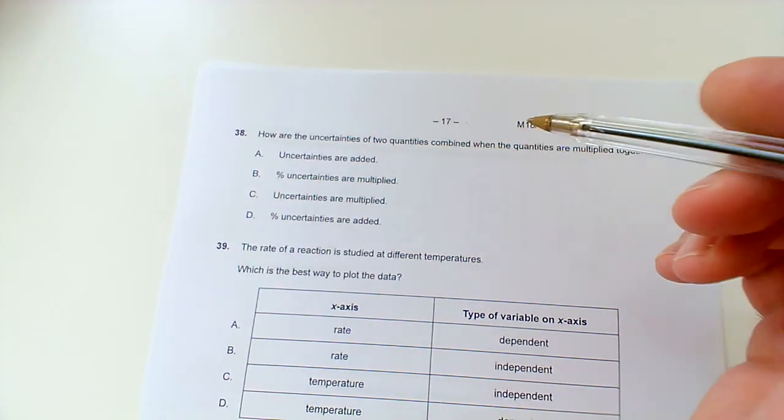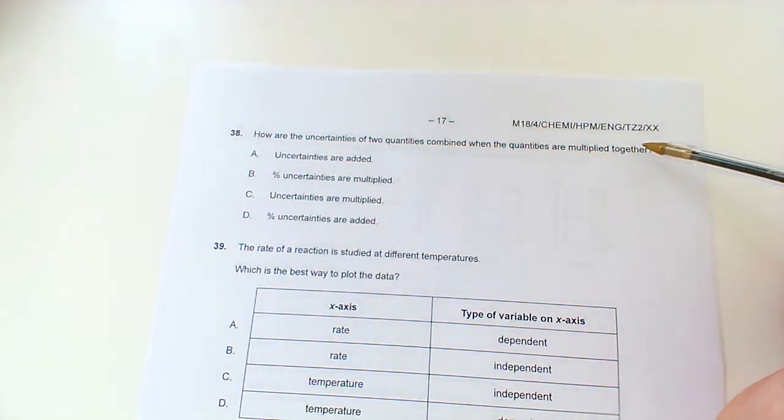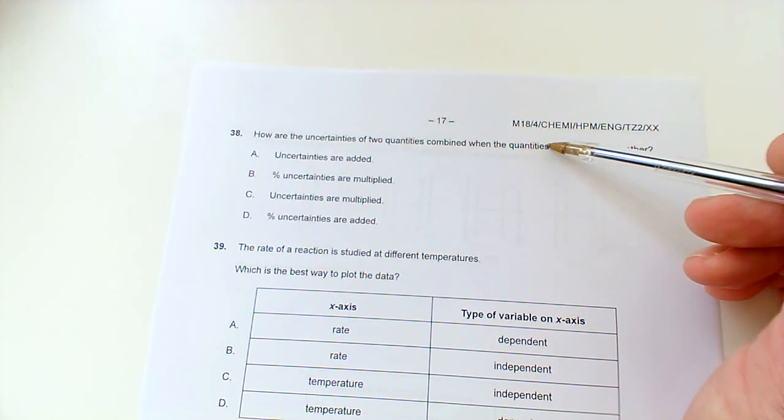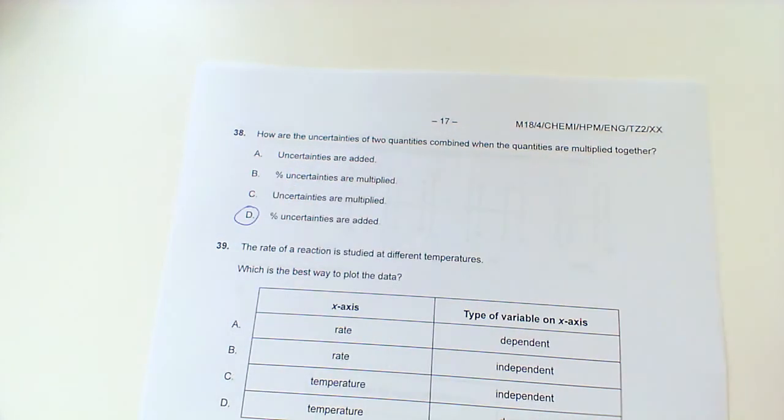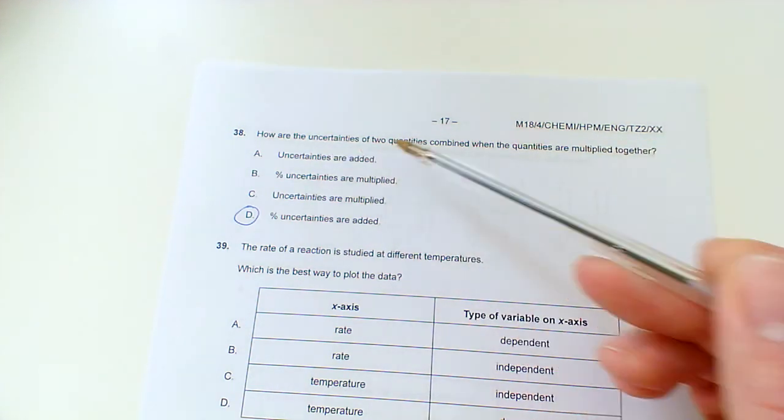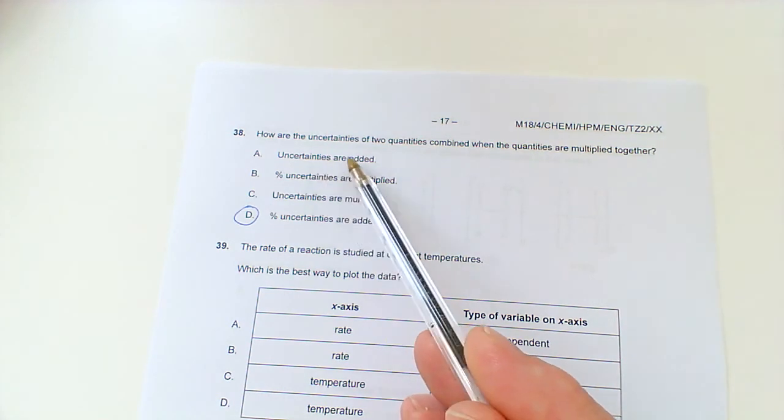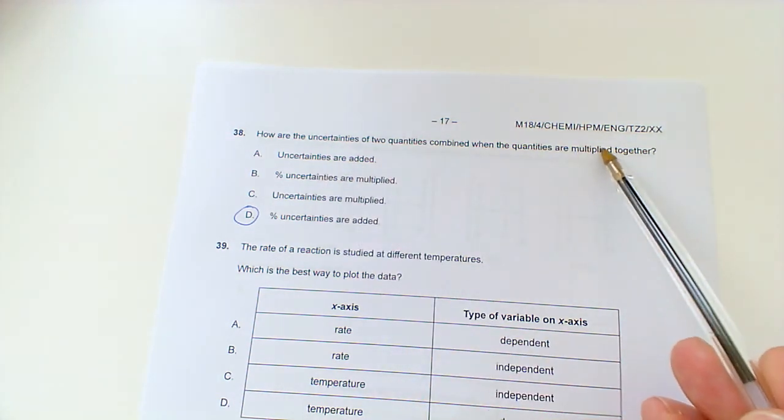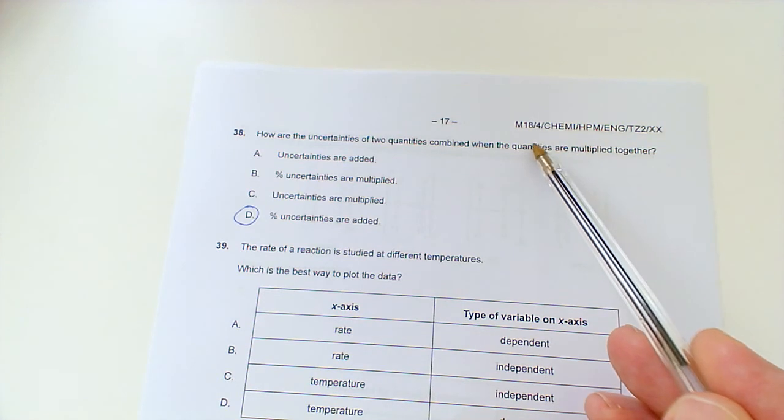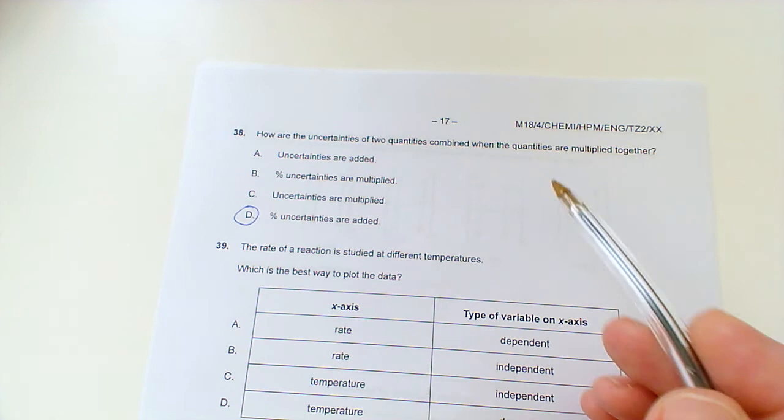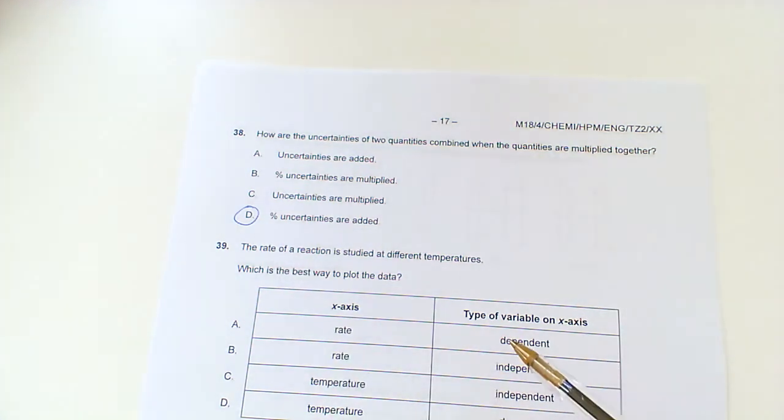38, how are the uncertainties of two quantities combined when the quantities are multiplied together? Well, what we need to do is find those percentage uncertainties and then add them together. So, we'd want to be going with this one. If it was saying if they're added or subtracted together, then we would simply just take the uncertainties and add them together. But if it's a multiplication or a division, we need to find the percentage uncertainties by doing the absolute uncertainty divided by the true measured value times 100, and add them together to give the percentage uncertainties.